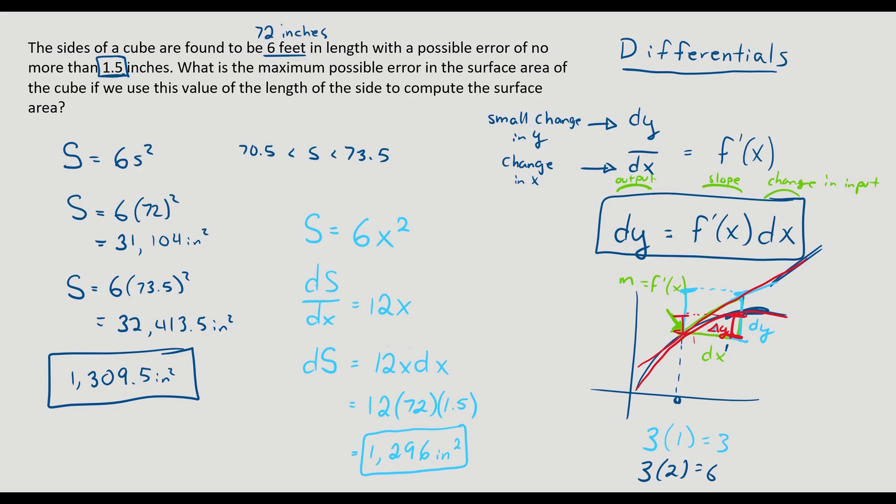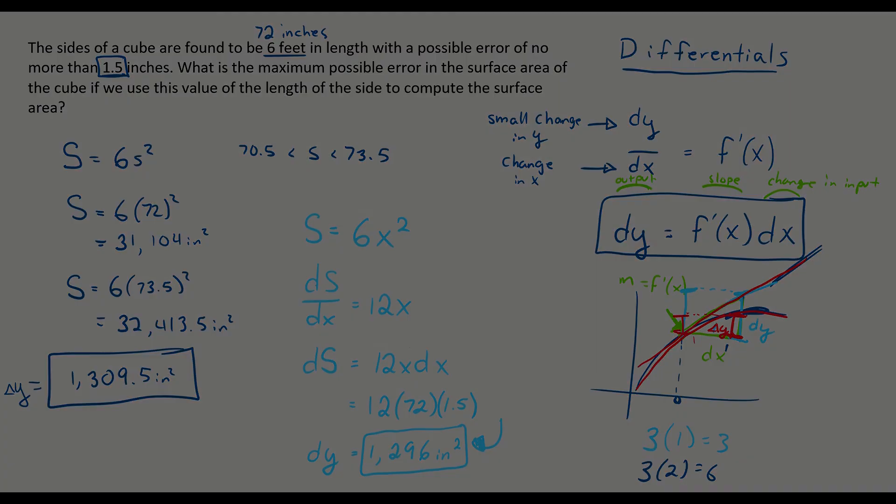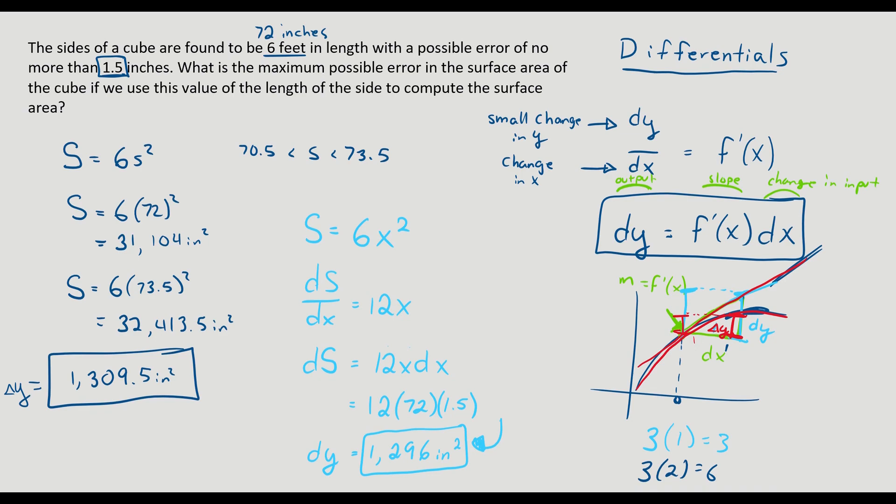And so here you can see the difference between these two. On the first one, what I did in blue, I could call this the change in y. And a lot of books use that notation. That is the actual, the very specific difference in possible error of the surface area. But when I did this blue, this is the dy. So approximately what it is. And you can see how they're close. And there's an error there. But they are close in value. But this is how I use differentials to estimate that difference. So now I want to slide over to another problem. And we'll try it again. And we'll go kind of quick with the second one.